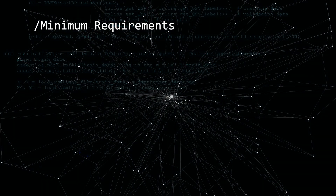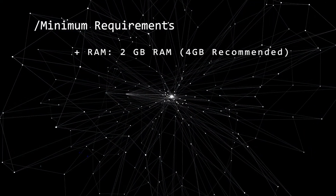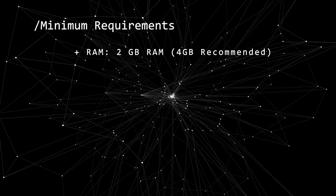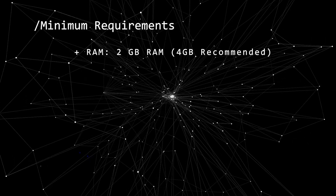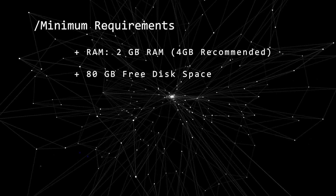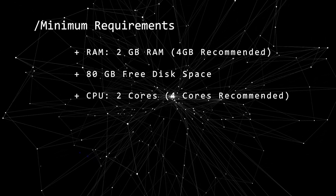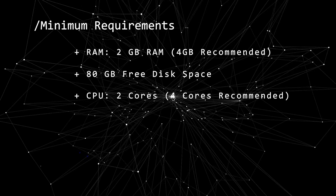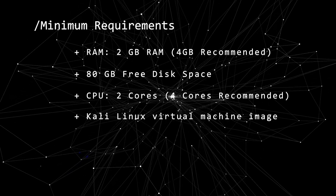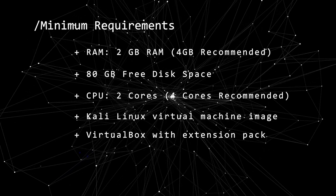Before we begin, let's take a look at the minimum requirements. You're going to want to have at least 2 gigs of RAM, 4 recommended, 80 gigs of free hard disk space, 2 or more CPU cores, the Kali Linux virtual machine image, and VirtualBox.